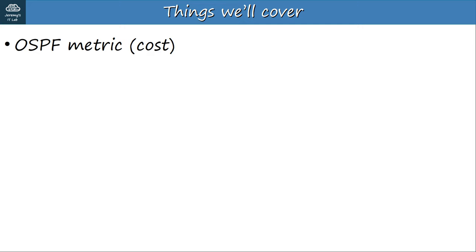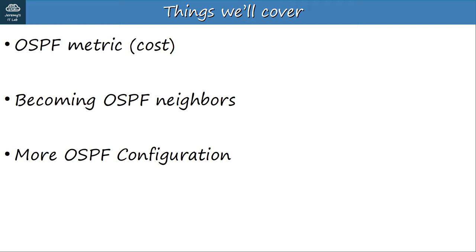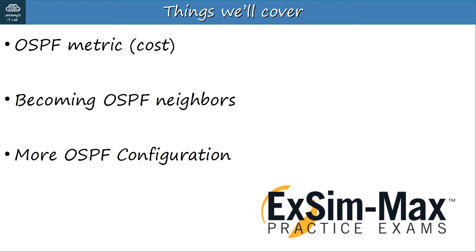We'll cover three main topics. First up, OSPF's metric, which as you know is called cost. It's not so difficult to understand, so you should know it well for the exam. The next topic will be how routers become OSPF neighbors. Finally, I'll introduce some more OSPF configurations. Make sure to stick around until the end for a bonus question from Boson ExSim, a set of practice exams for the CCNA which I used to prepare for my CCNA and CCNP exams.